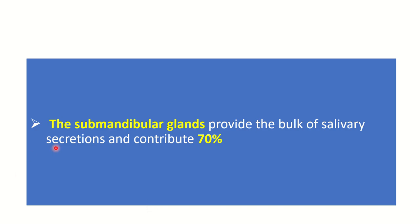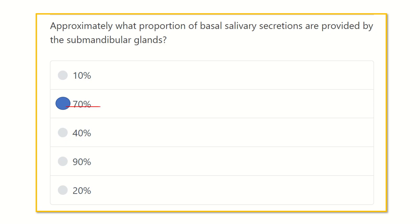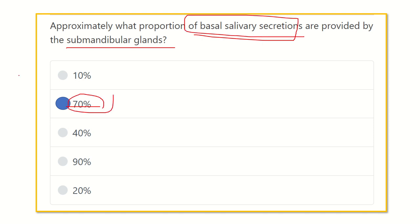The submandibular gland provides the main bulk of salivary secretion, contributing about 70%. The larger portion of saliva is secreted by the submandibular gland, and it is about 70%. So our answer is that the submandibular gland provides the salivary bulk of about 70%. Thank you all.